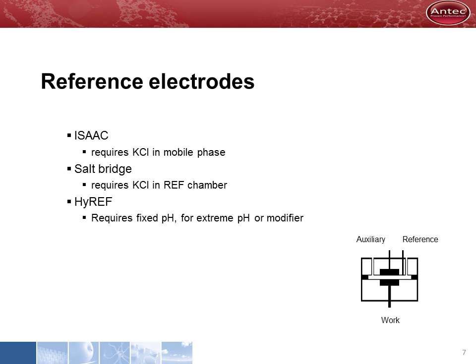Reference electrodes are only functional when they have an equilibrium with certain ions in the solvent surrounding them. For stable operating conditions, these ions must be present at a fixed concentration. The ISAC and the salt bridge are silver-silver chloride electrodes that require chloride ions in solution. The HI-REF is a hydrogen reference electrode which requires a fixed pH of the solvent.